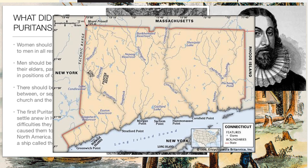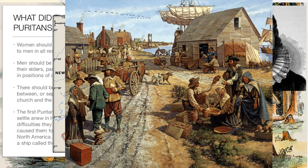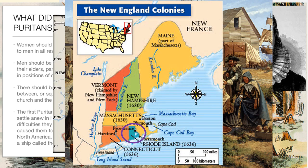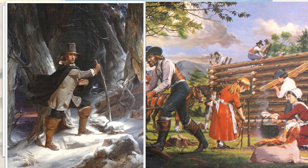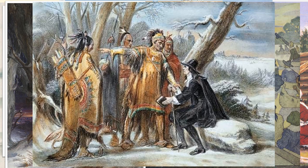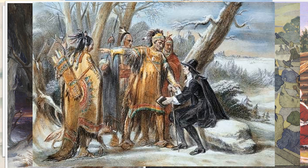Hartford quickly became an important center of government and trade. The last colony of the New England group to be settled was Rhode Island. The Rhode Island colony was founded by those who wanted to escape the lack of religious tolerance found in the other New England colonies. Its founder, Roger Williams, had been banished from the Puritan churches of Massachusetts Bay because he had wanted religious tolerance and separation of church and state. Roger Williams paid the Indians for their land, as he and several others believed it was the right thing to do.